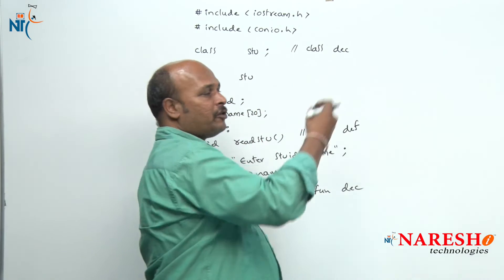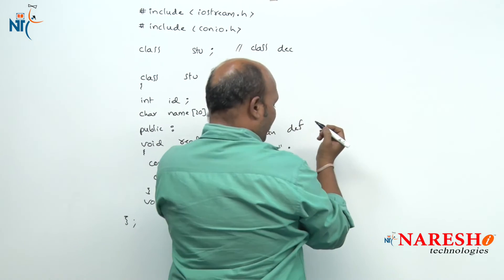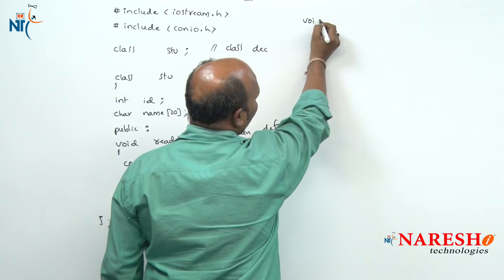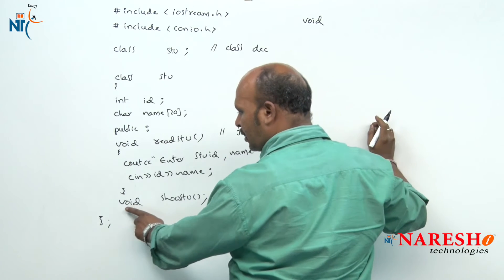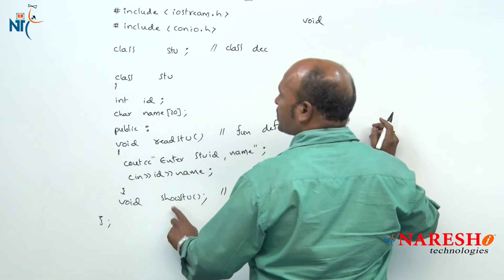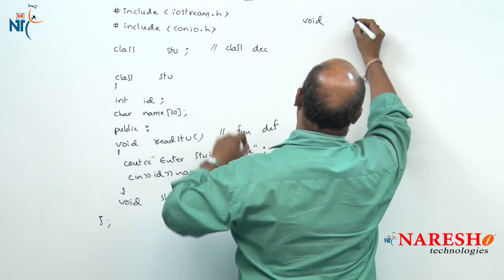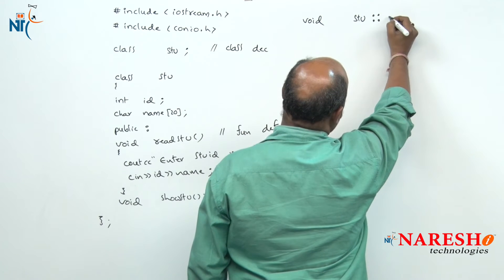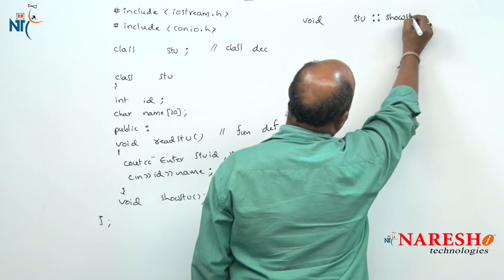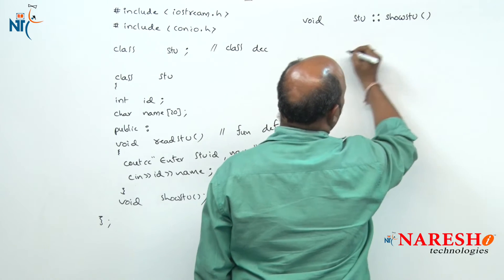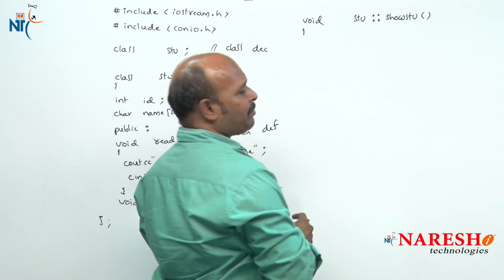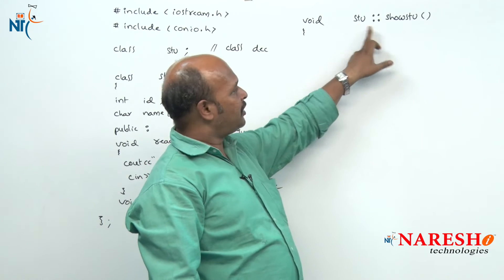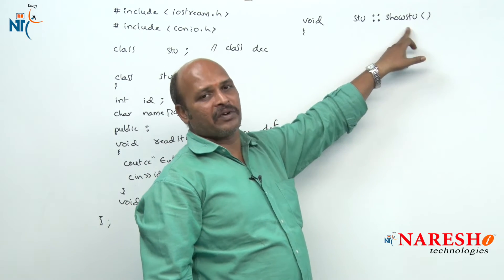I am going to write the definition outside the class. The rule is: first the return data type — void. Next, which class it belongs to — student class: student colon colon, then the function name — show_student — with empty brackets since there are no arguments. So void is the return type, student is the class name, and show_student is the member function.